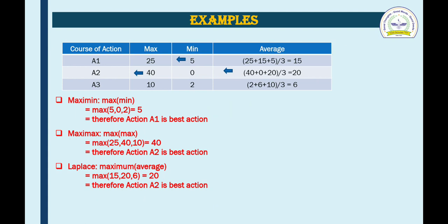Now, Laplace criteria. Laplace is nothing but the maximum of average values. We already got the average values, so among 15, 20, and 6, the maximum average value is 20, which corresponds to action A2. Therefore, action A2 is the best action with value 20. So, thank you very much.